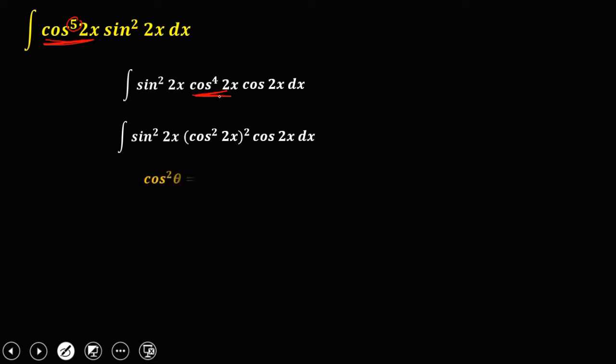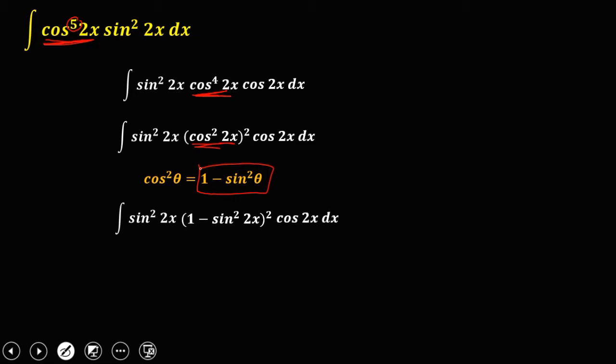Using the identity that cosine squared theta equals 1 minus sine squared theta, we substitute: cosine squared 2x equals 1 minus sine squared 2x. So we have the integral of sine squared 2x times (1 minus sine squared 2x) to the power 2 times cosine 2x dx.